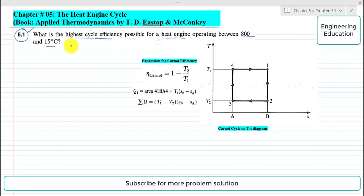The statement of the problem is very simple. We have to find the highest cycle efficiency possible for a heat engine operating between 800 degree centigrade and 15 degree centigrade. This problem, we have given only the temperatures.